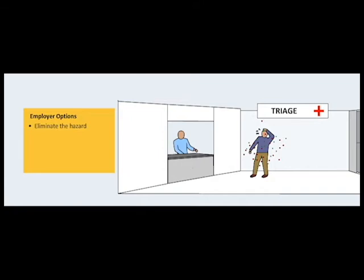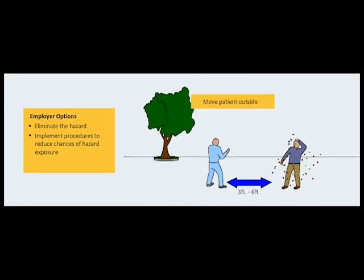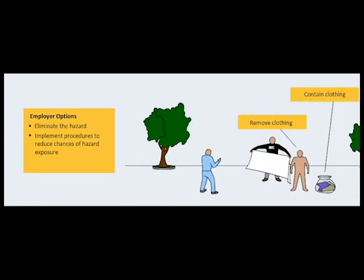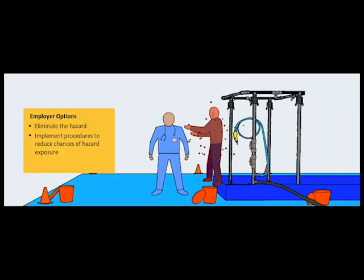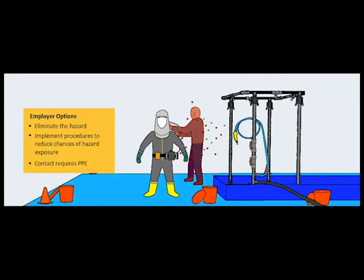The second option is to implement procedures that reduce the chances of hazard exposure. It is possible that this can be accomplished through the decontamination process, assuming that no direct patient-to-staff contact is necessary. If contact is necessary, then your hospital is required to provide you with appropriate personal protective equipment that effectively shields you from hazardous substances on the patient.